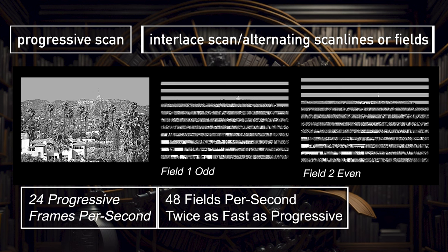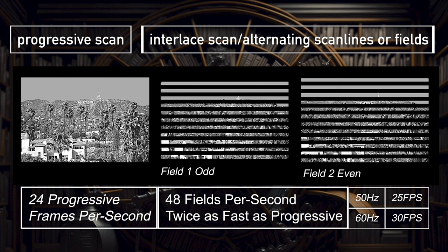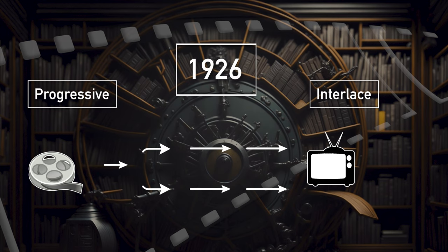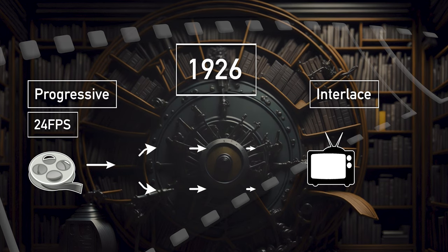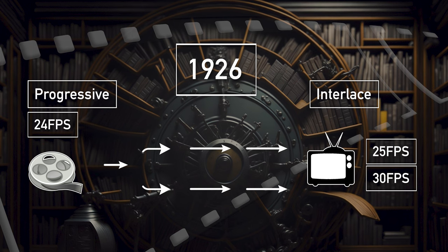Two standards were developed from this and were driven by either 50 Hz or 60 Hz. Europe and other countries using 50 Hz adopted 25 frames per second, and America using 60 Hz adopted 30 frames per second. This was the beginning of what I call the fork in the road of production, because film ran at 24 frames per second and now TV running at 25 and 30 frames per second, which would have a great impact on how we distribute content when films were converted to each of these standards.